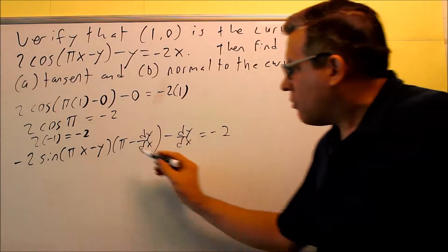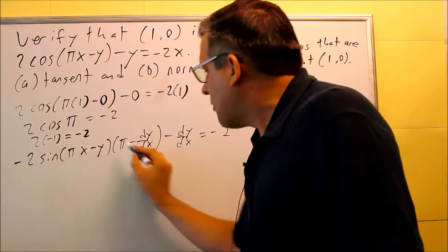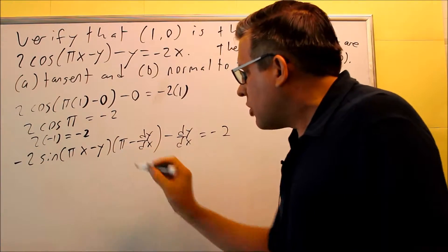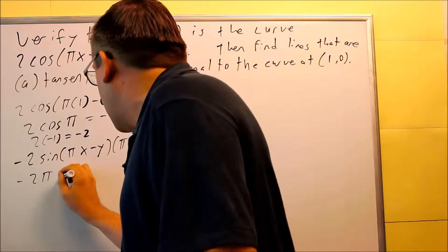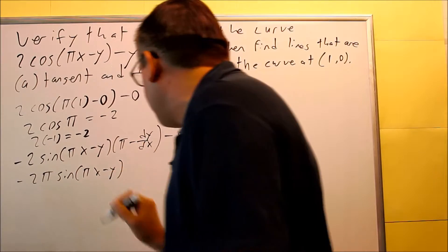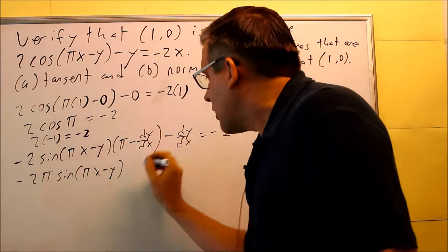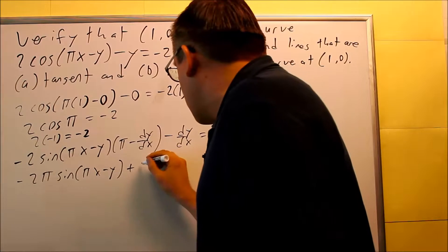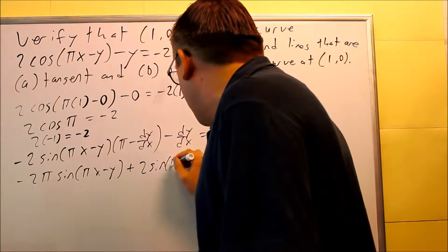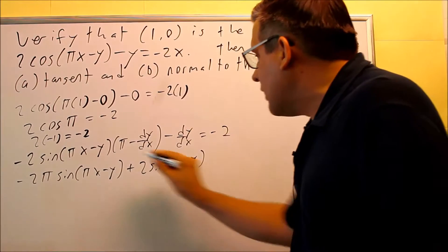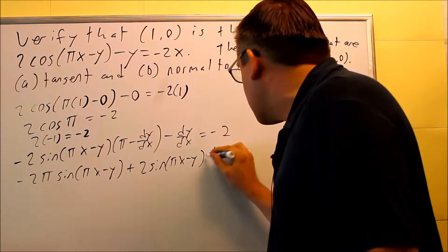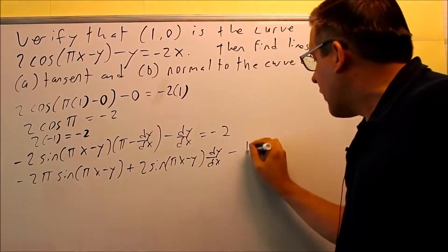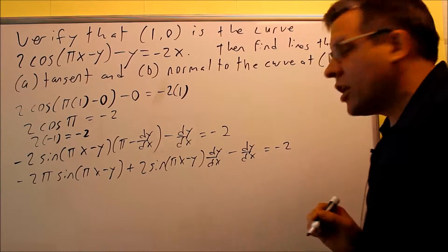Now we're going to multiply and use the distributive property - taking all this times pi, and then all this times dy/dx. When you multiply the first term times pi, you get negative 2 pi sine of (pi x minus y). And then minus times minus is plus, all this times dy/dx, so you get plus 2 sine of (pi x minus y) times dy/dx. We still have this dy/dx separately, and then equals negative 2.